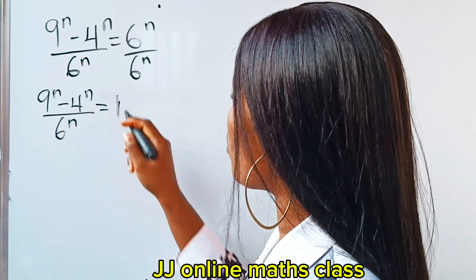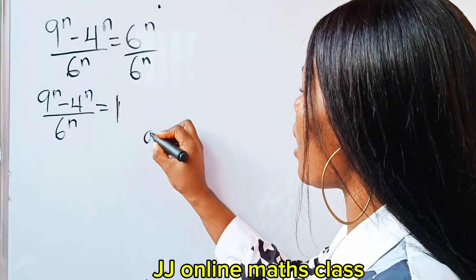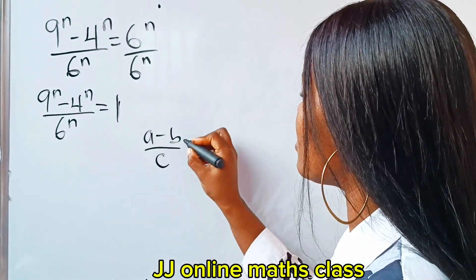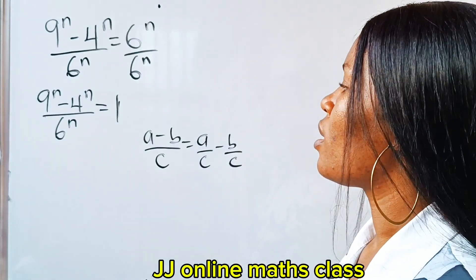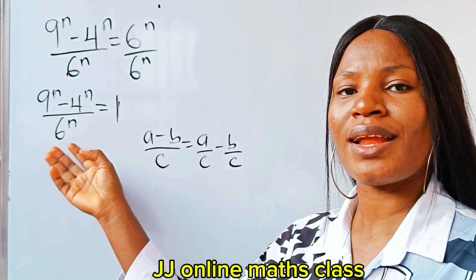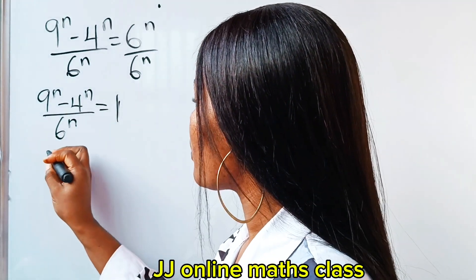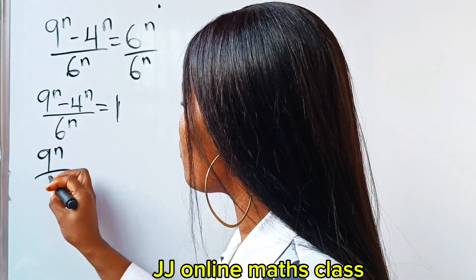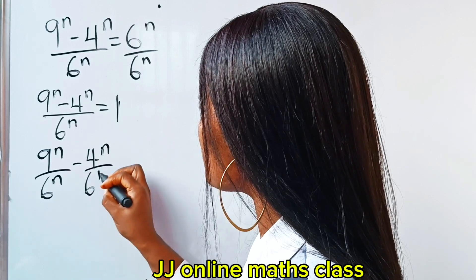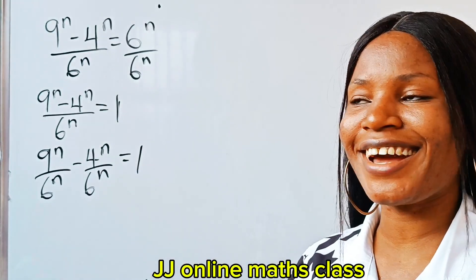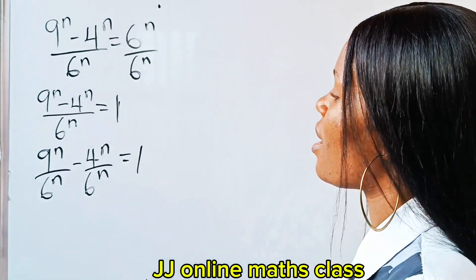We will have 9 to the power of n minus 4 to the power of n, divided by 6 to the power of n, is equal to one. Now recall that (a − b)/c is the same thing as a/c − b/c. Since they share the same denominator, let's distribute the denominator for both terms. So we will have 9^n / 6^n minus 4^n / 6^n equals one.